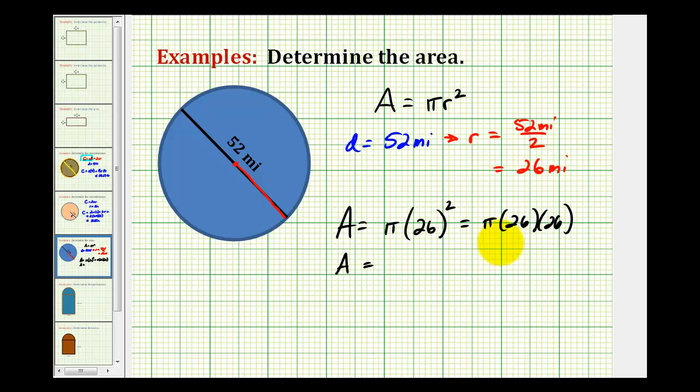We can express the exact area in terms of pi, and then we can evaluate the expression using pi, and then round to the hundredths place value. Let's go ahead and do both. Well, 26 times 26 is 676, so the exact area would be 676 pi square miles.